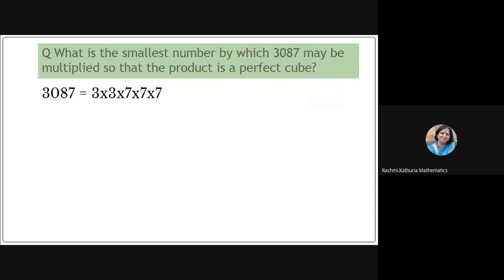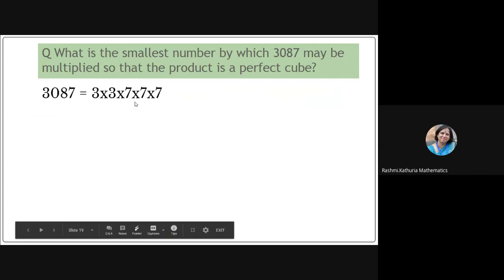7 × 7 × 7. Now observe it carefully. We have to multiply this number 3087 by the smallest number so that it becomes a perfect cube. Observe carefully, are we getting the triplets here?